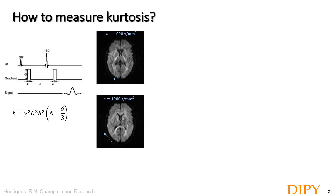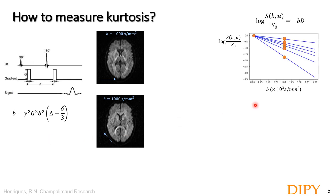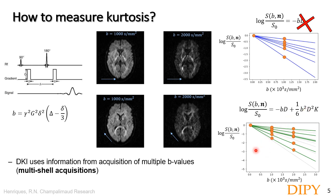Now that I've shown the potential of DKI, the question is how to measure it in practice. More conventional techniques such as standard DTI quantify the anisotropy of diffusion using different directions but with a constant B value. DKI, however, assumes that at each direction diffusion is Gaussian, and therefore expects that the signal decays with the B value in a linear fashion. However, if we measure this on biological tissues, we observe a deviation from these linear decays due to the non-Gaussian properties. DKI uses this non-linear decay behavior to measure kurtosis, and for this it requires acquisitions at multiple B values, also known as multi-shell acquisitions.